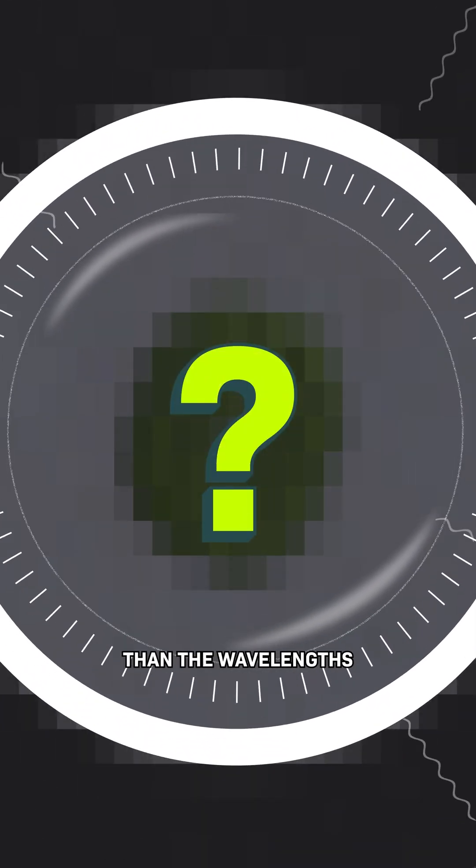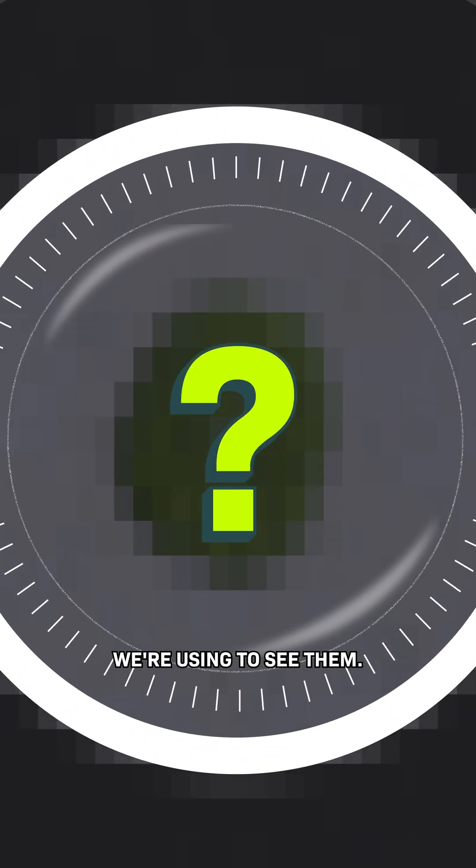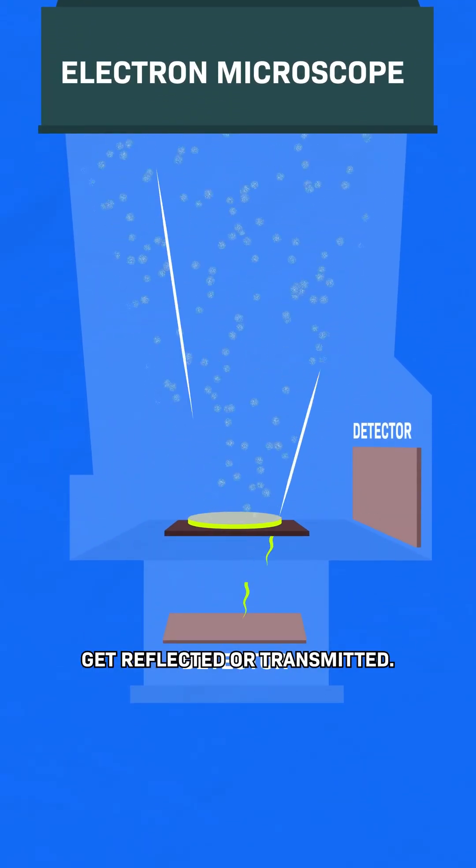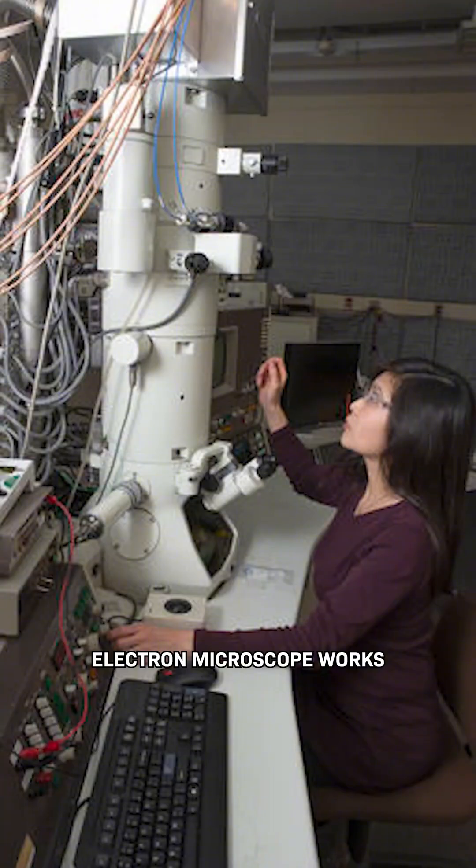But there are objects that are even smaller than the wavelengths of visible light we're using to see them, so we need something even smaller, like firing beams of electrons, and then measuring how they get reflected or transmitted. That's how an electron microscope works.